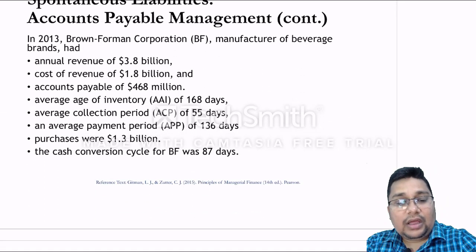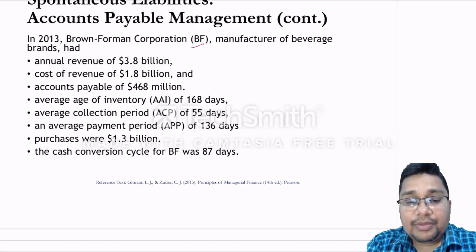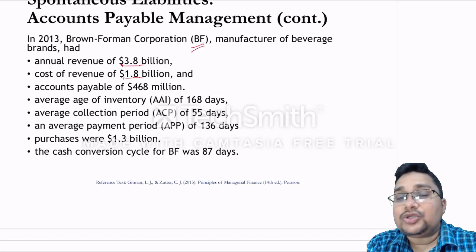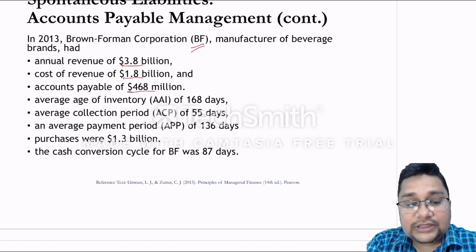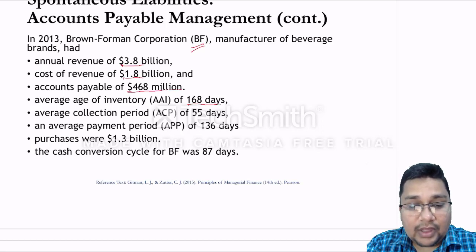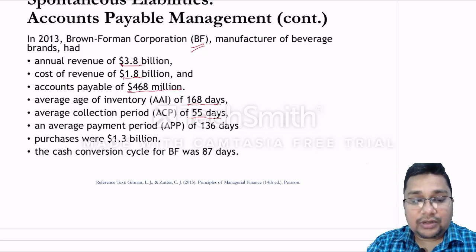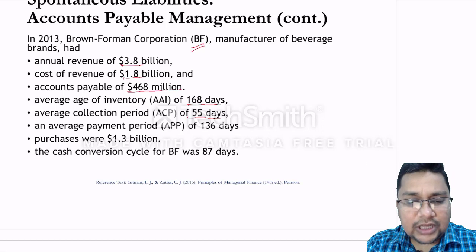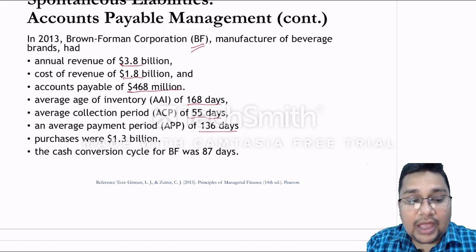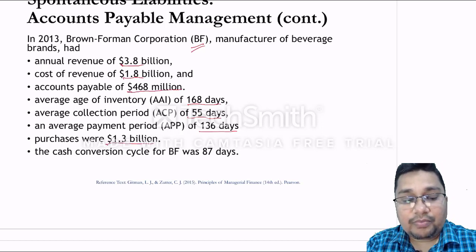As an example, in 2013 Brown Forman Corporation — a manufacturer of beverage brands — had annual revenues of 3.8 billion dollars, cost of revenue of 1.8 billion dollars, and accounts payable of 468 million dollars. The average age of inventory was 168 days, the average collection period was 55 days, and the average payment period was 136 days. Purchases were 1.3 billion dollars.